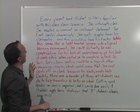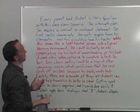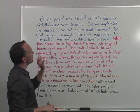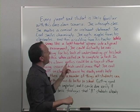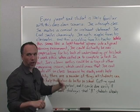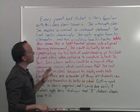Let's read it together. 'Every parent and student is likely familiar with this class clown scenario. Joe interrupts class. Joe makes a comical or irrelevant statement. Joe Cool smiles charmingly. Joe Cool gets giggles from his classmates, and then a scolding from his teacher.' I think I would change every instance to 'Joe Cool' because it gives a little rhyme to it. Notice how the scolding from the teacher stops the story — it's the stopping point — before I transition to tying this to the essay topic.